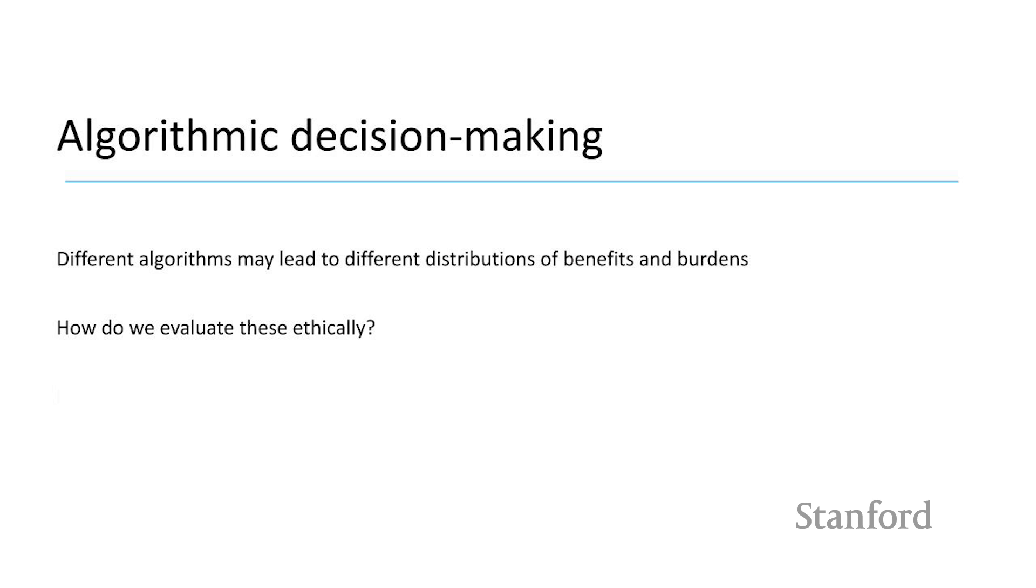During this term, we're going to be pairing short video lectures to the assignments that contain ethics questions that you can use as reference for these assignments and in the future. Right now, we're going to be talking about algorithms and distribution. When you consider decision making from an algorithmic point of view, different algorithms may lead to different distributions of benefits and burdens in a population. What we're hoping that you ask yourself with this assignment question is how to evaluate these distributions from an ethical perspective.